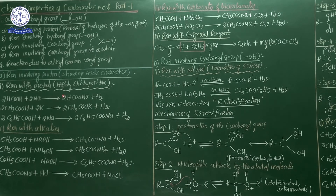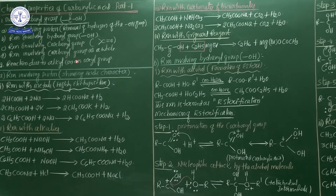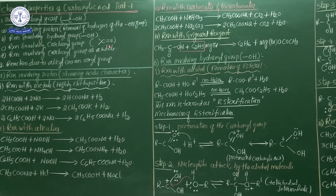Hi students, in this session we are going to discuss the chemical properties of carboxylic acid, part 1. Already in my previous session, I completed the introduction and preparation methods of carboxylic acid. A molecule of monocarboxylic acid is composed of the combination of carboxylic group as well as the functional group. This is the COOH group — the carboxylic acid group — containing the carbonyl group, hydroxyl group, and additionally the alkyl group on the left side.